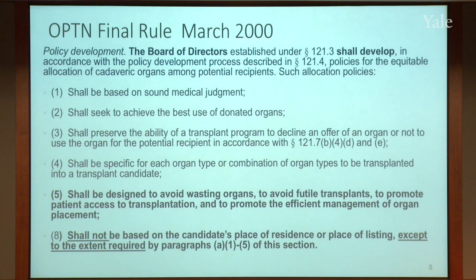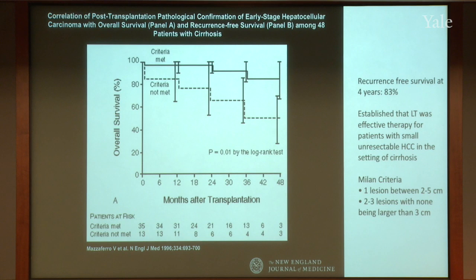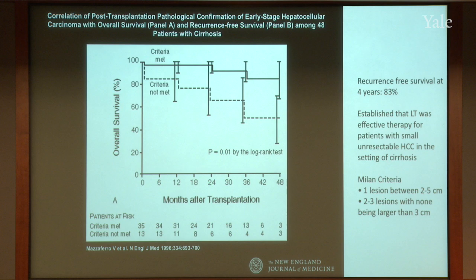When liver transplantation first became technically possible, everything was tried. There were many different patients transplanted with tumors of many different sizes and numbers, and we weren't as careful studying this. However, a number of colleagues in Italy were very smart and started collecting data in a very prospective manner. These 48 patients changed history for over the next two decades in terms of our allocation and thinking about transplant and hepatocellular carcinoma.